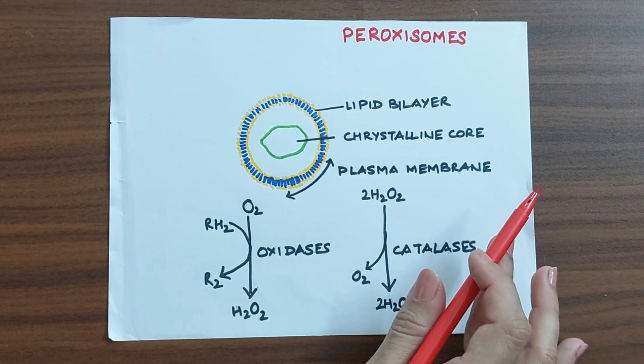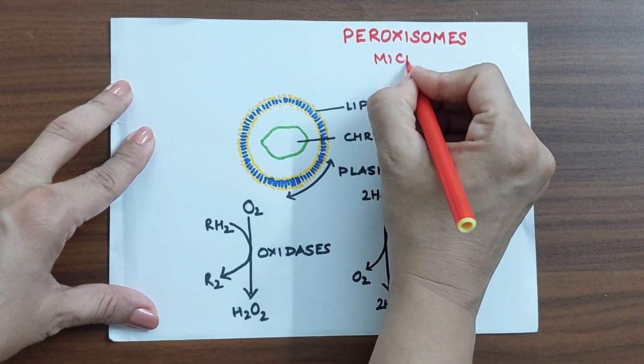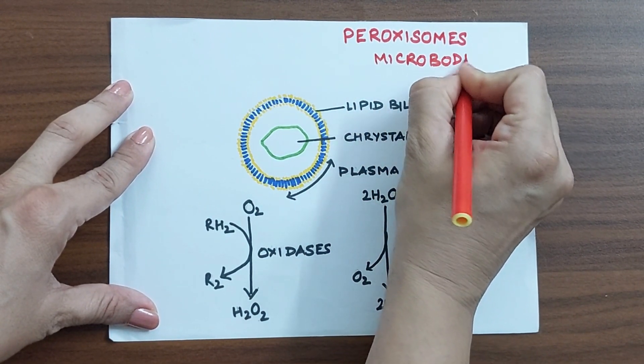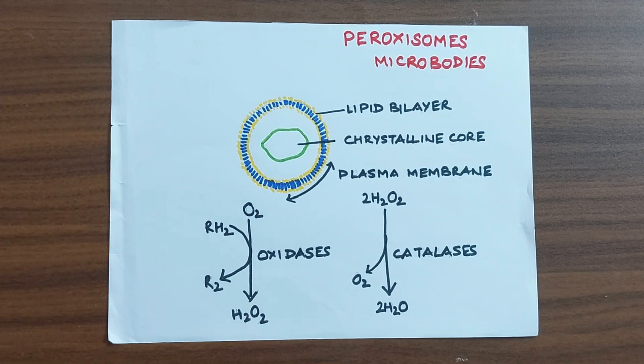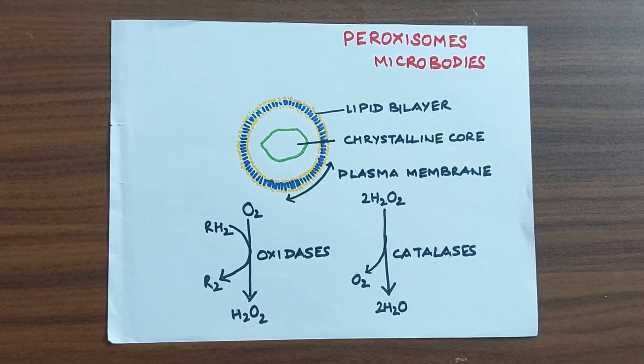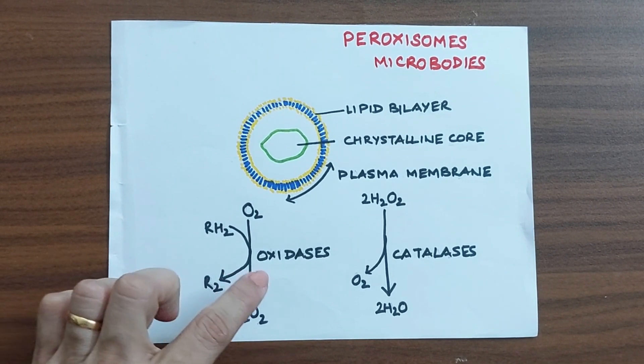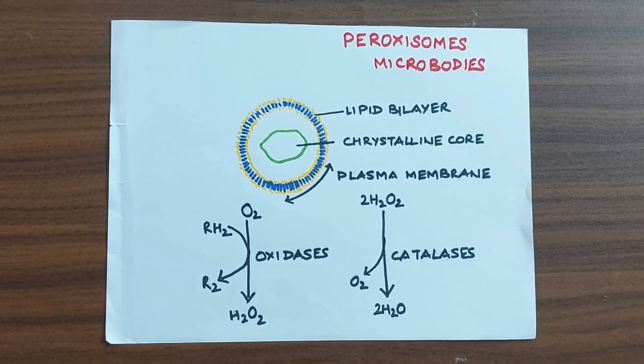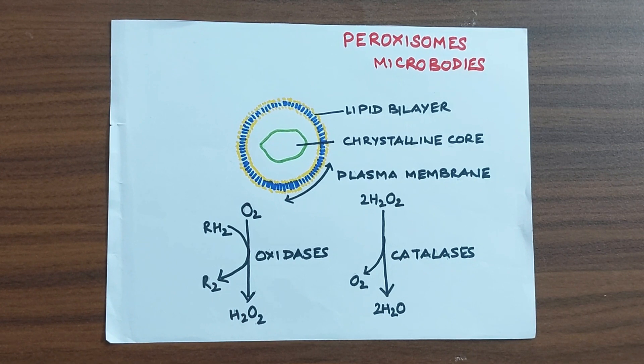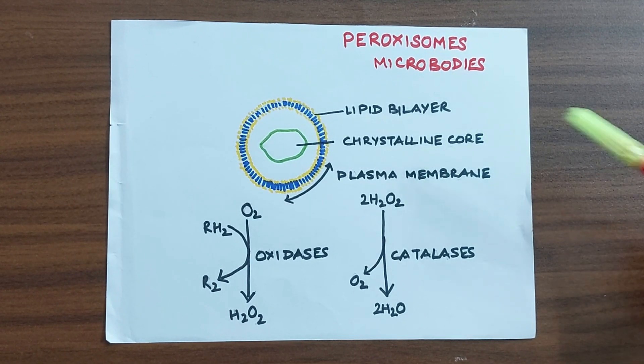Now, what are peroxisomes? Peroxisomes are also known as microbodies. And these are also very simple membrane-bound satellite structures which are found in the cell. And they also contain very powerful enzymes, which are the oxidative enzymes, the oxidases and the catalases. They carry out oxidative reactions, which are very important for removing toxic substances from the cell. And peroxisomes are very commonly found in kidney and liver cells.